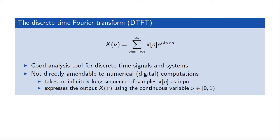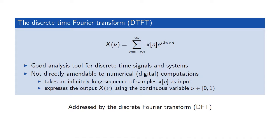Even if we use the property that the DTFT is periodic, meaning we only need to know it for one fundamental period, there is still an infinite number of normalized frequencies within this range and we couldn't store it. These shortcomings are addressed by a very similarly named transform, namely the discrete Fourier transform.